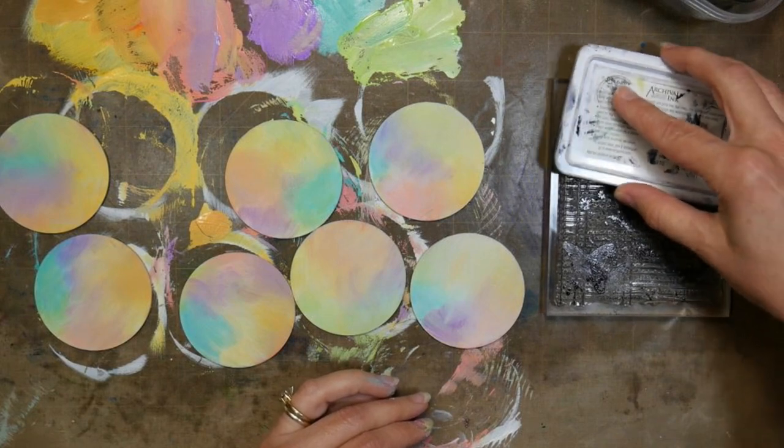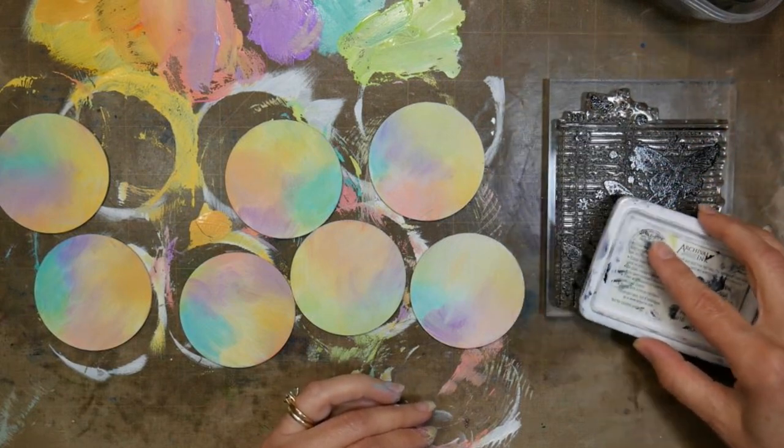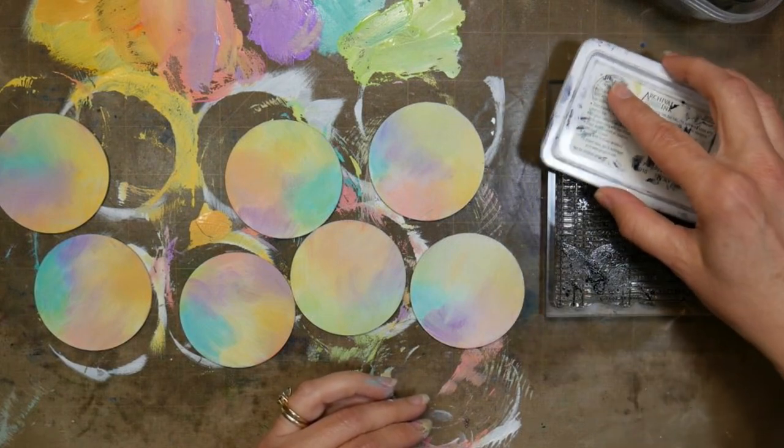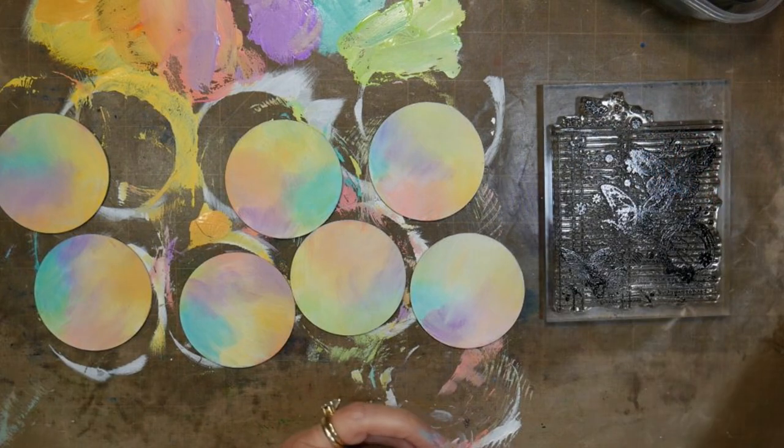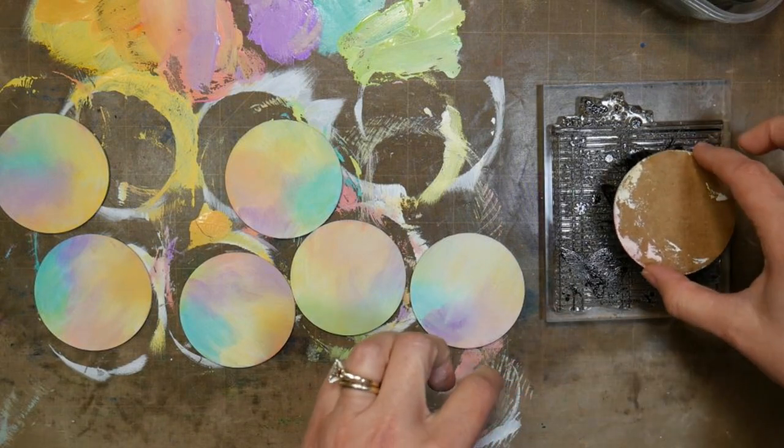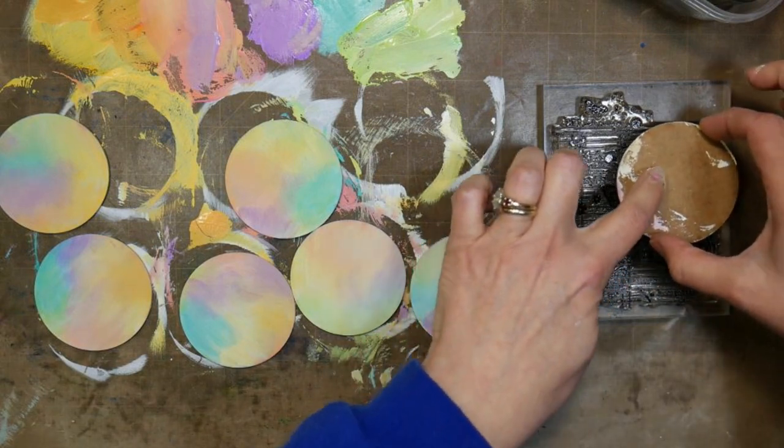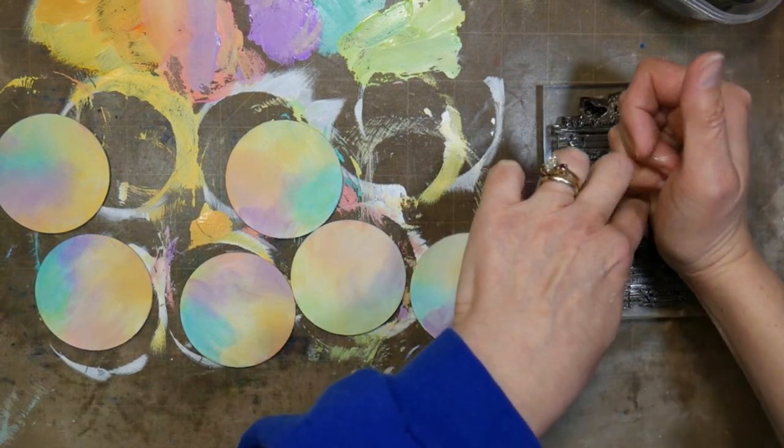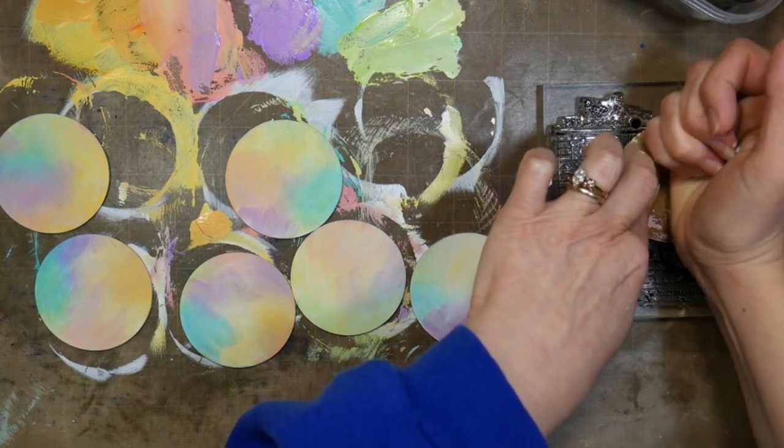I put the Penelope D stamp on a large block, but if you don't have a block large enough you could set it down on your craft mat and it would be fine. The nice thing about having it on a block is that it raises it up a little bit. I'm just going to press my dried ATCs down to the stamp and give it a real good push.